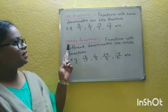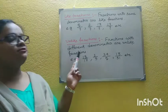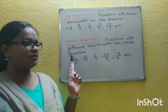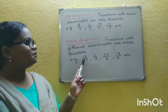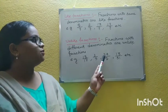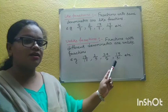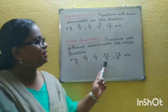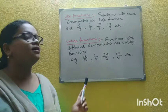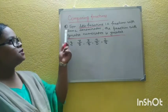Now, what are unlike fractions? For example: 13/17, 2/9, 24/5, 13/31. Here, all the denominators are different. So all these are unlike fractions.